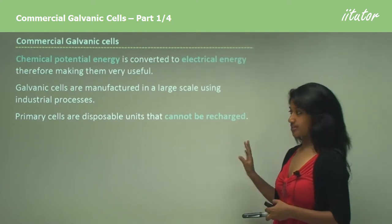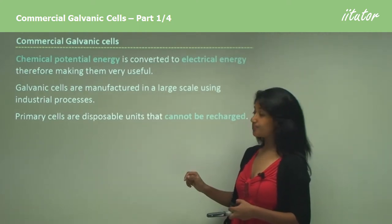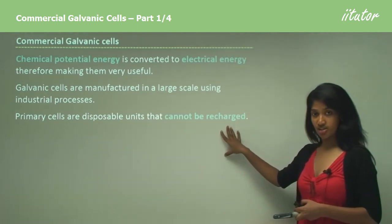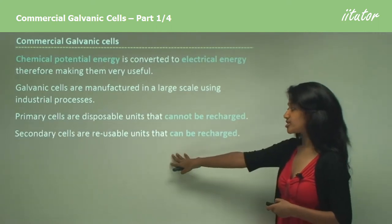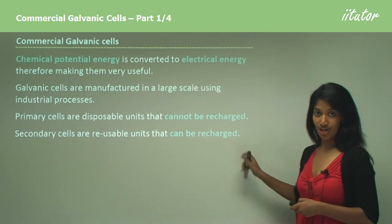There are two different types of cells. One is called the primary cell, and these cannot be recharged and they are disposed of. While secondary cells are reusable and they can be recharged.